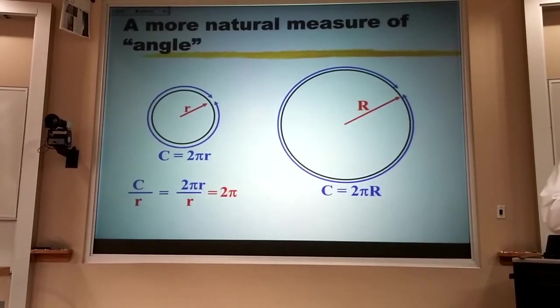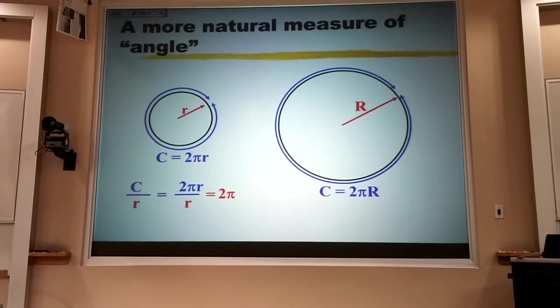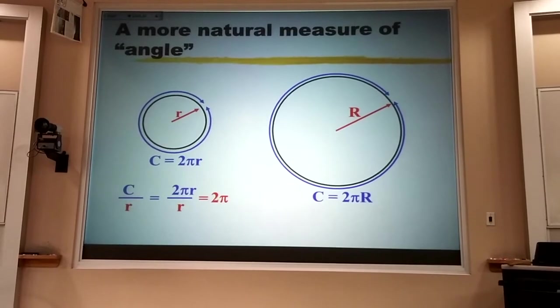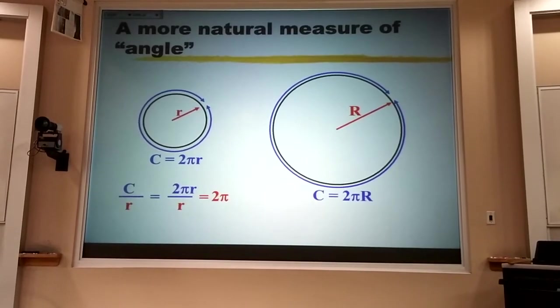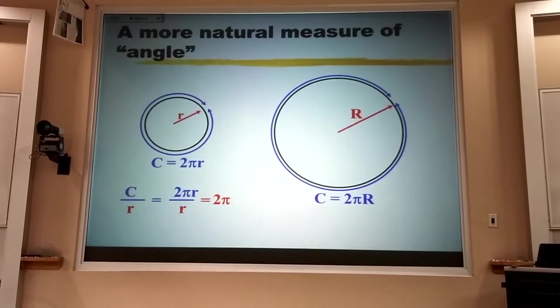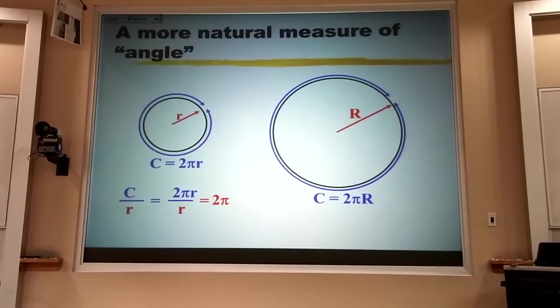6.28, for every single circle, big or small. And that screams out to me that that's what nature wants us to use when describing once around any circle.